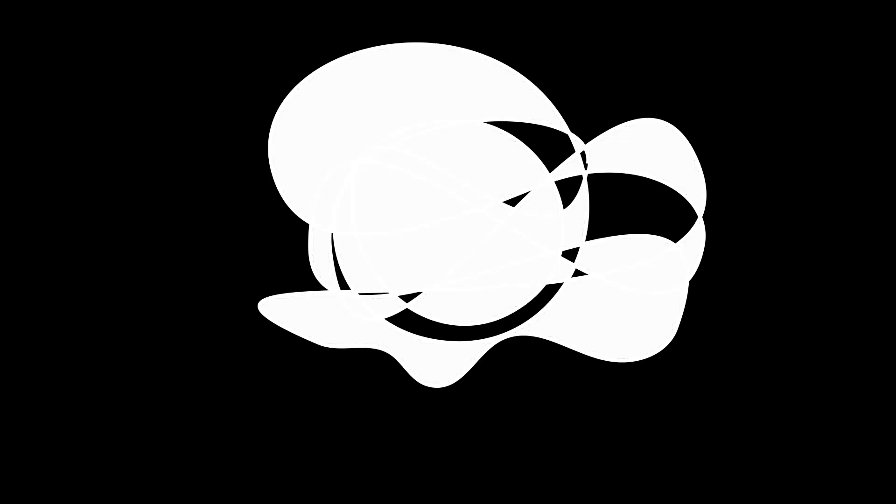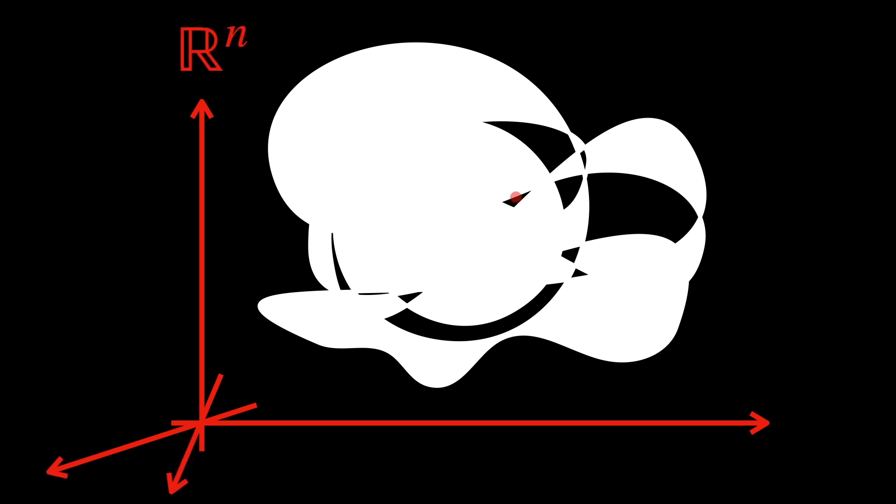They are important because they describe how steeply a curve climbs or falls at a point. When we have a higher dimensional manifold embedded in a higher dimensional Euclidean space, these vector spaces become more abstract and impossible to visualize.